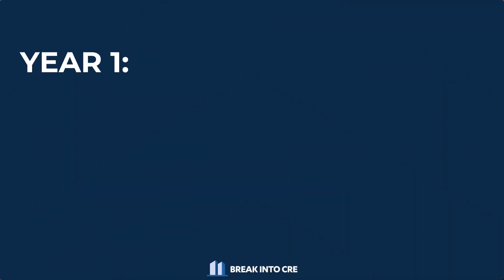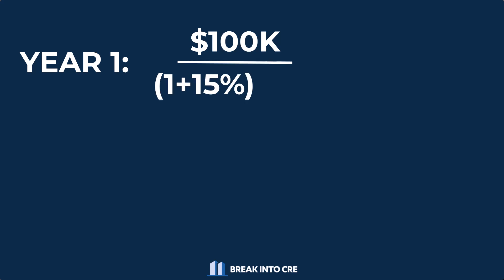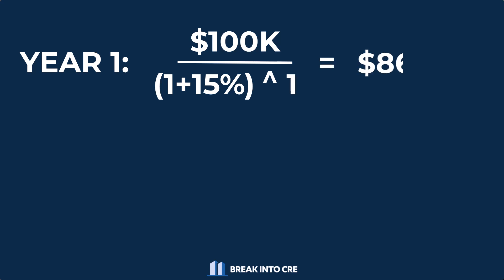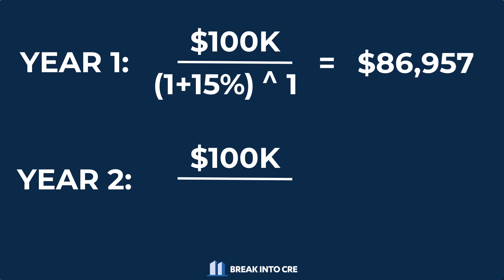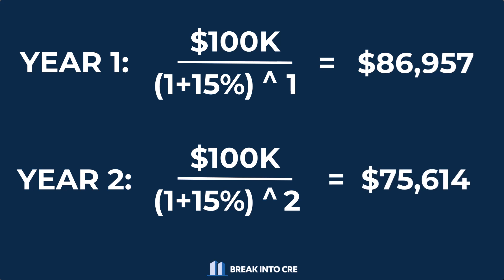So in year one, we need to take that $100,000 amount divided by (one plus 15%), taken to the power of one, to get a little over $86,000 in this year. To calculate this in year two, we then need to factor in that two years have elapsed — so dividing that same $100,000 value by (one plus 15%) to the power of two, which gets us just a little over $75,000 in this period.